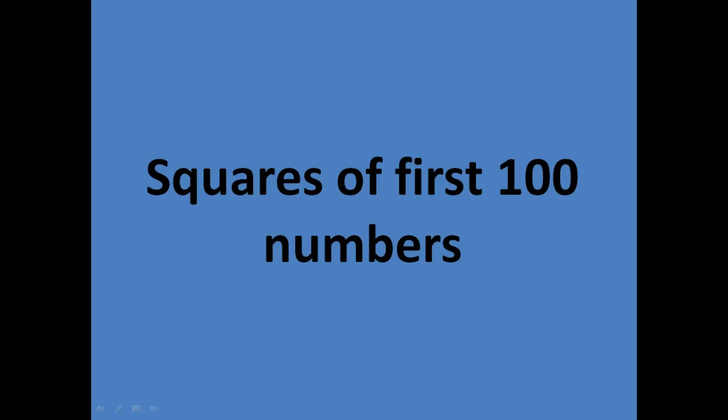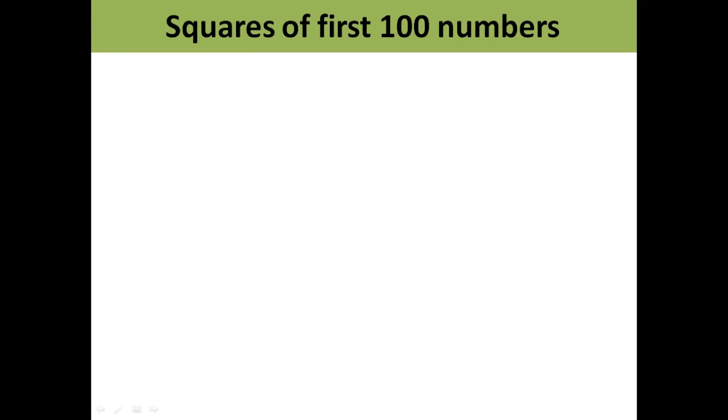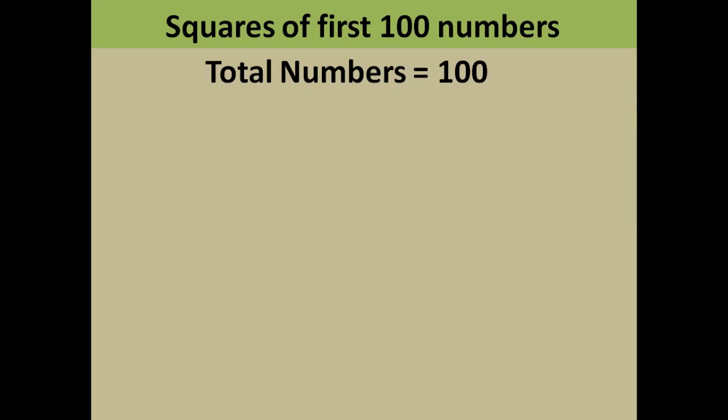Now let's start it. The total numbers from one to hundred. Out of this, it is expected that you know the squares of first nine numbers: 1, 2, 3, 4, 5, 6, 7, 8, 9.